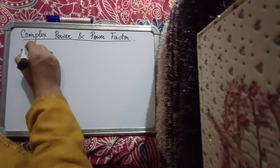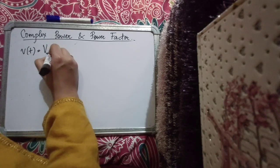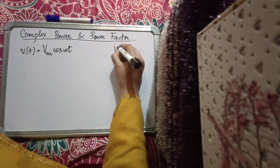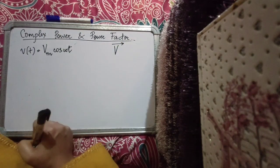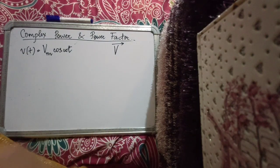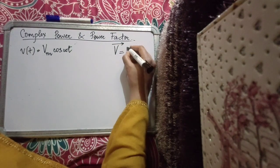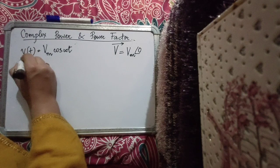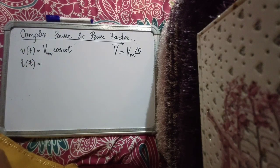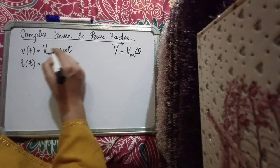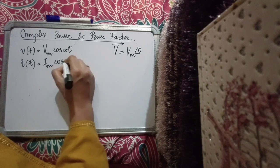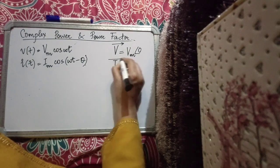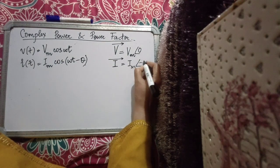Let's begin with a time-domain voltage signal Vm cos(ωt). I've taken a cosine signal so it's intuitive to represent in the phasor domain. In the phasor domain this signal is represented as Vm at an angle of zero. I've assumed the voltage has a phase of zero. In the same circuit, let the current flowing be Im cos(ωt − θ), or in the phasor domain, Im at an angle of −θ.